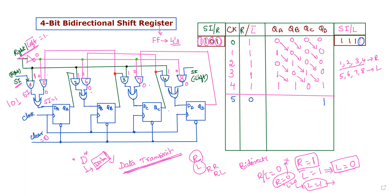For left-shifting, the serial input is applied from the right side. The rightmost flip-flop receives the serial input for left shifting, while for right shifting the serial input is at the leftmost flip-flop. In left shifting, data moves from right to left. You can see the output shifting leftward at each clock pulse.